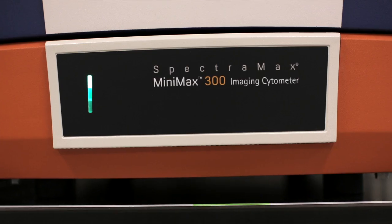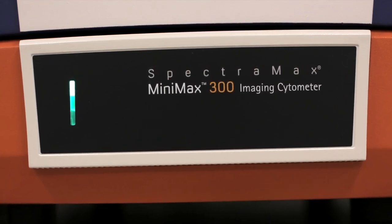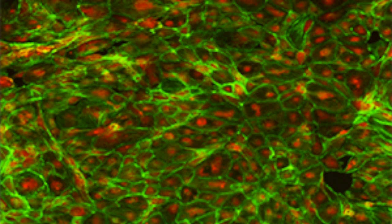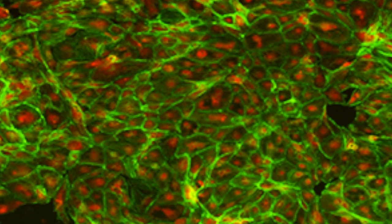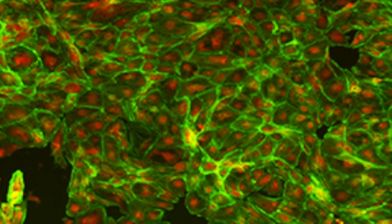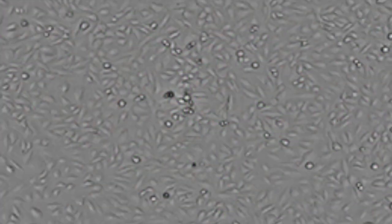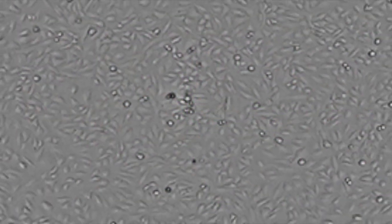300 Imaging Cytometer now offers three imaging channels and a patent-pending stain-free cell detection algorithm allows users to count their cells or measure cell confluency using stain-free brightfield images.